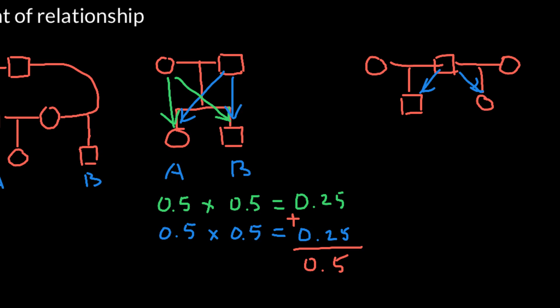These two children wouldn't share any of the genetic makeup from the mothers, because they have different genetically unrelated mothers. So individual A and individual B are each going to get 0.5, or 50%, of their genetic makeup from their father. We can say that individual A and B would share about 25% of their genetic makeup. The coefficient of relationship between these two individuals would be 0.25, or 25%.